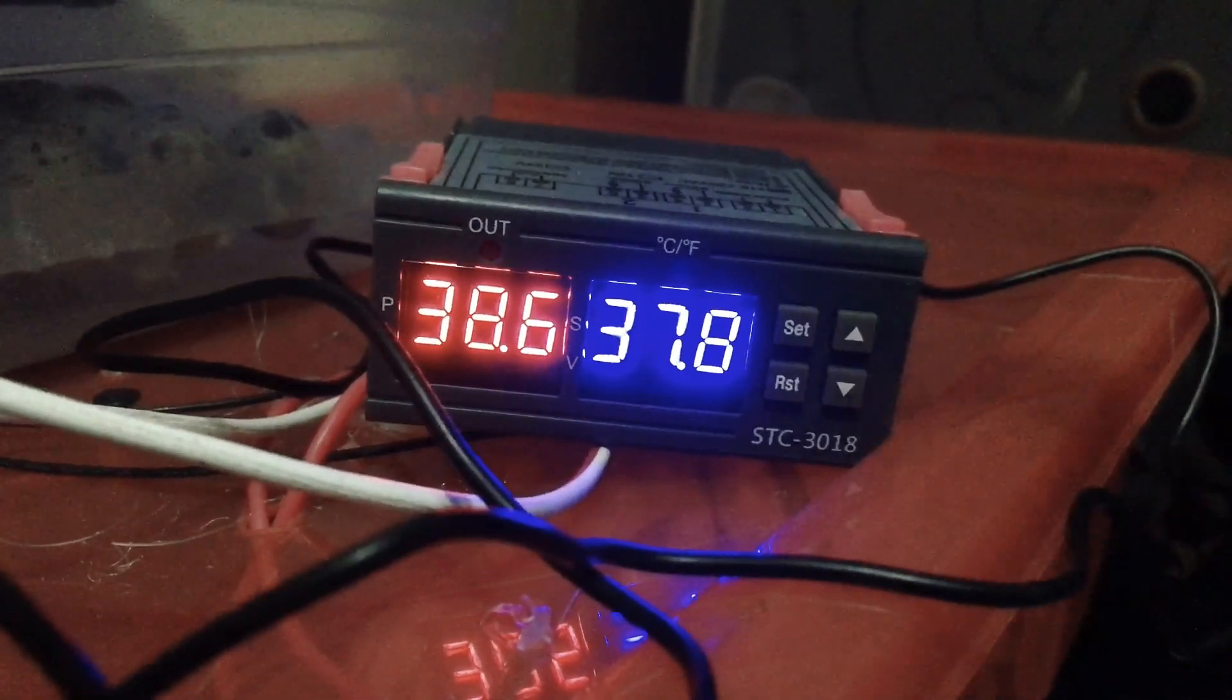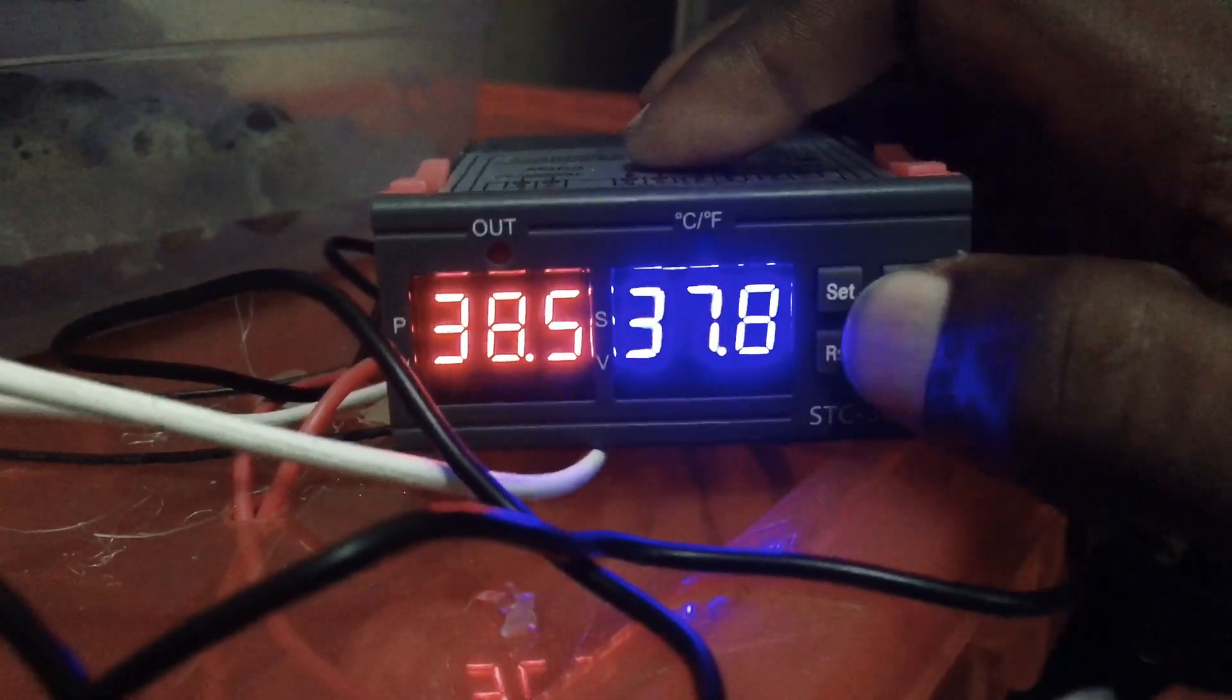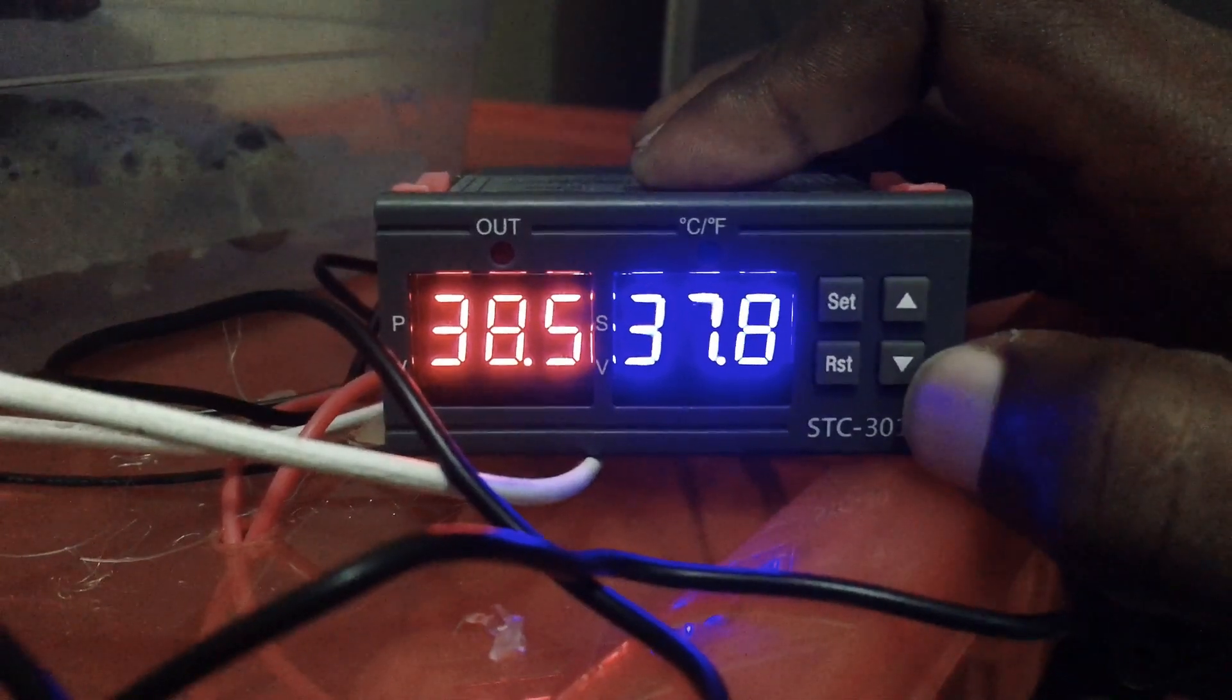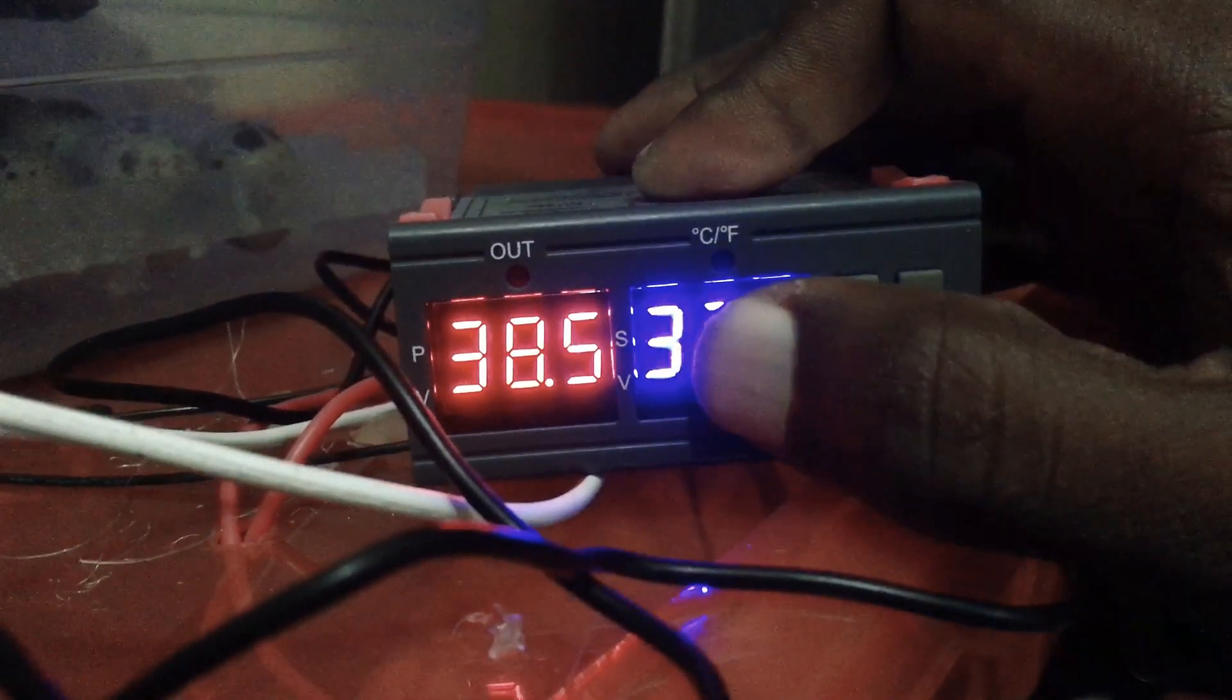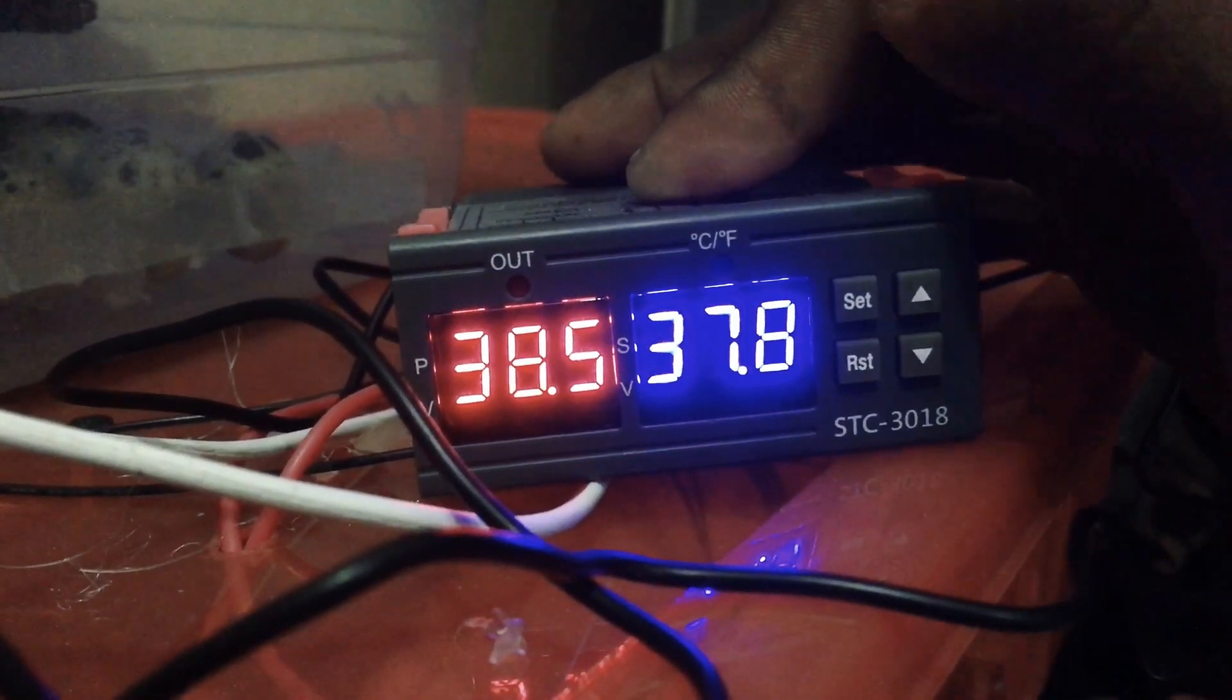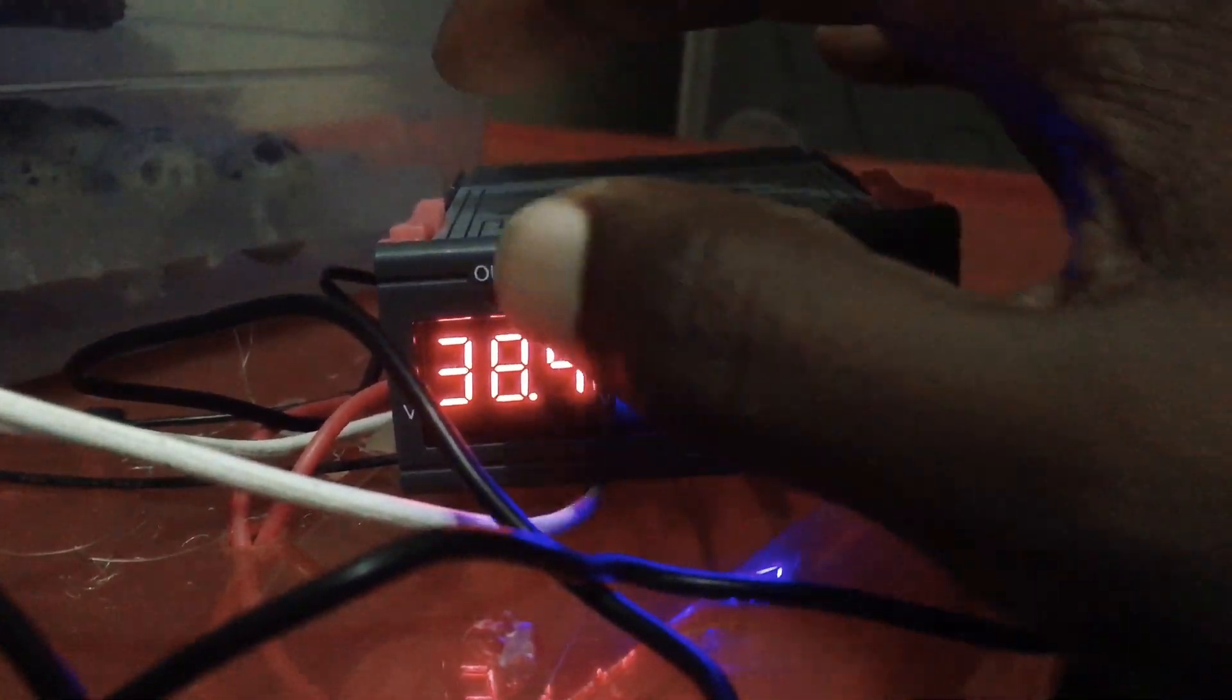On this note, let's start. So here we have our STC-3018, and right now this is the temperature we want it to reach so that the heater can cut. Here is our current temperature which is 38.4, which is reducing as you can see.